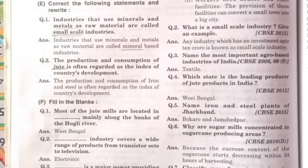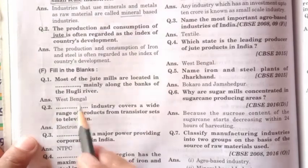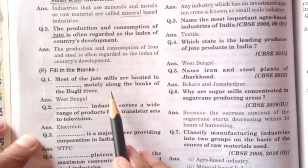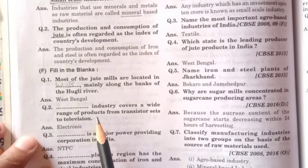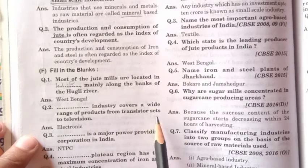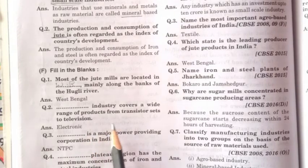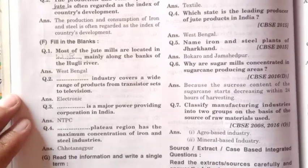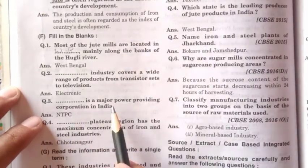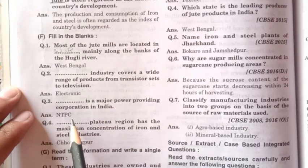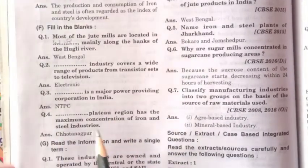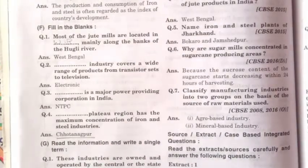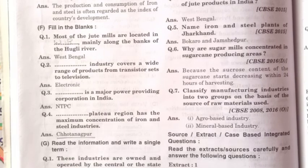Next part is fill in the blanks. Most of the jute mills are located in West Bengal, mainly along the banks of the Hooghly River — so the answer is West Bengal. Next: the dash industry covers a wide range of products from transistor sets to televisions — the answer is the electronics industry. Dash is a major power-providing corporation in India — the answer is the National Thermal Power Corporation. Dash plateau region has the maximum concentration of iron and steel — the answer is the Chota Nagpur Plateau, which is a part of the peninsular plateau.